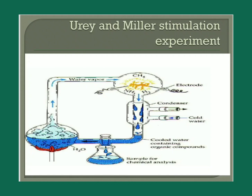In Urey-Miller's experiment chamber, they sealed a mixture of water vapor, methane, ammonia, and hydrogen — a reducing atmosphere, representing the first atmosphere — in a spark chamber provided with electrodes for the lightning discharge, supplying lightning energy. This was connected to another flask for boiling.